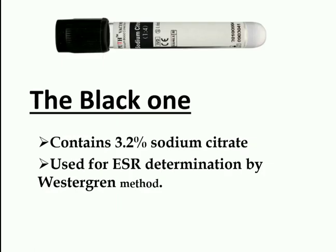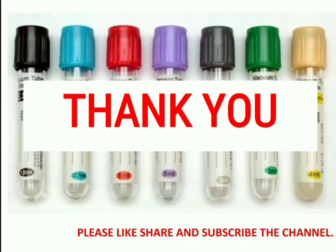The black tube contains 3.2% sodium citrate and is used for ESR determination by the Westergren method. The anticoagulant to blood ratio here is 1:4. Thank you — hope you liked the content. Please like, share, and subscribe to the channel.